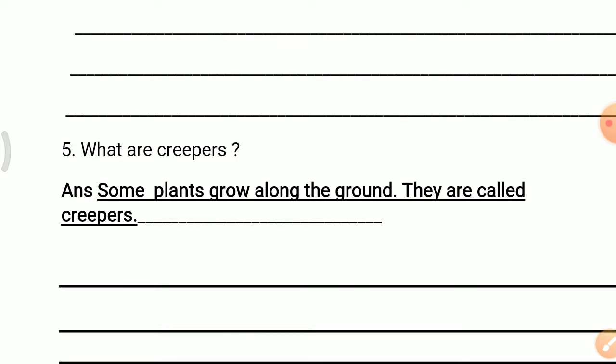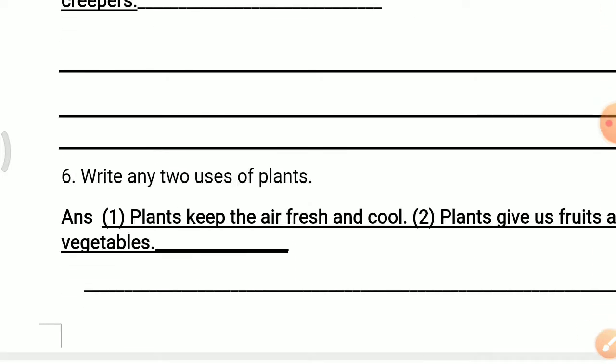Question 5: What are creepers? Answer: Some plants grow along the ground. They are called creepers. Plants that grow along the ground are called creepers. An example is watermelon.